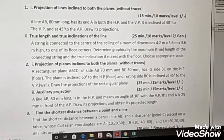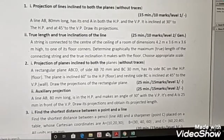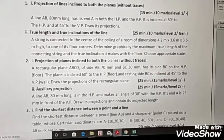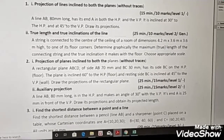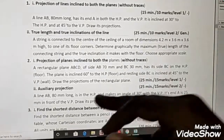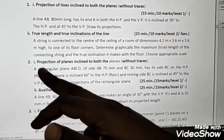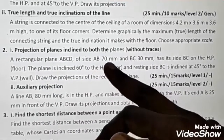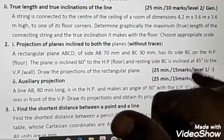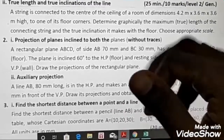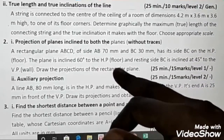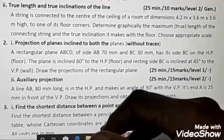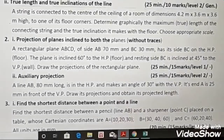Good morning friends. In this video I will try to explain how to do projection of planes if the plane is inclined to both the horizontal plane and vertical plane. I will take this question for our exercise: a rectangular plane ABCD of side AB 70 mm long and BC 30 mm has its side BC on HP. The plane is inclined 60 degrees to HP and the resting side BC is inclined at 45 degrees to the VP. Draw the projection of the rectangular plane.